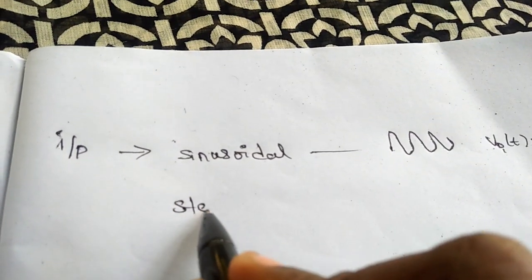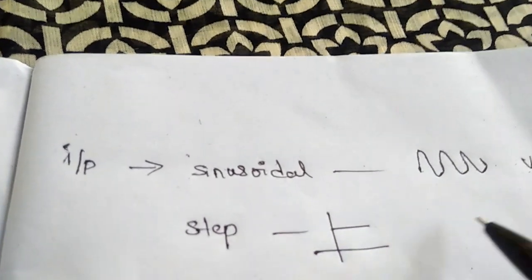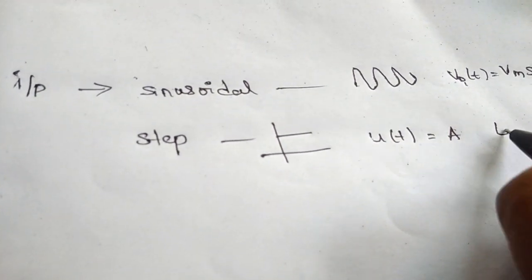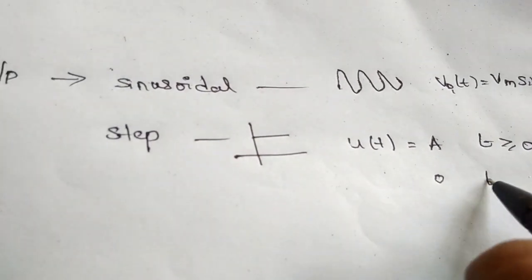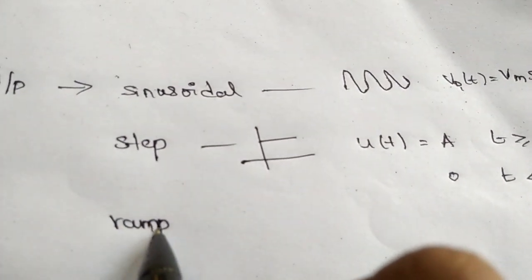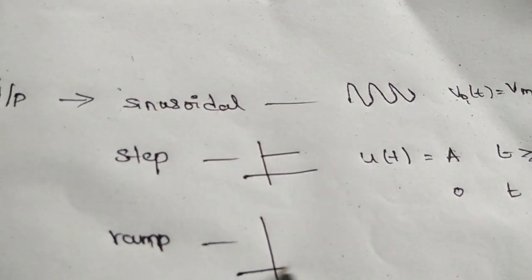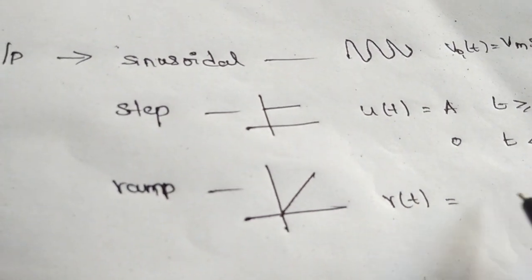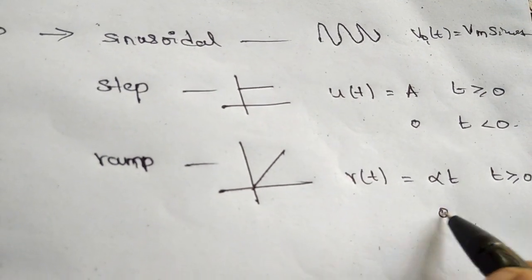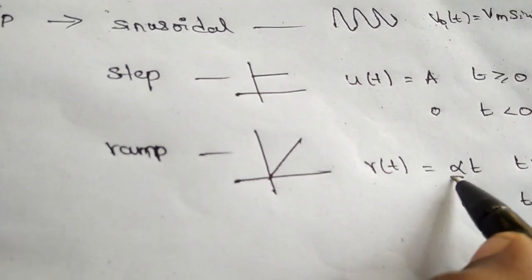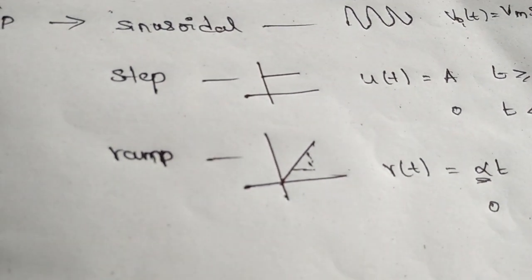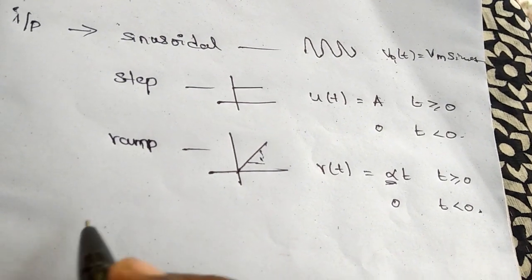The next input is the Step, represented as U(t), which equals A for t ≥ 0 and 0 for t < 0. And again, Ramp, represented as R(t), which equals α×t for t ≥ 0 and 0 for t < 0, where α is the slope of the straight line.